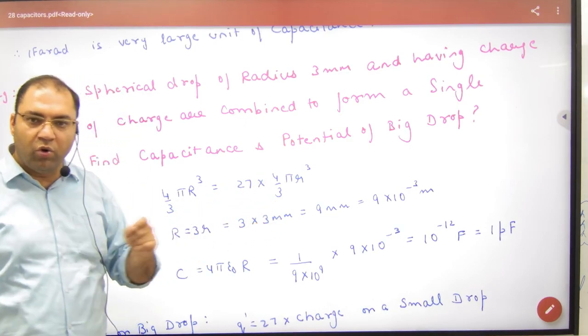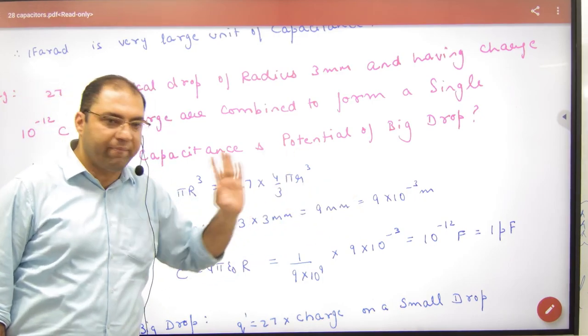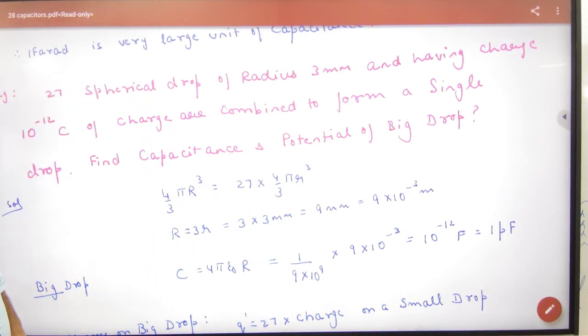Equate. If the small radius is 3 mm, then the large radius is 9 mm. First work: find capacitance and potential of bigger drop. I can't say potential how?